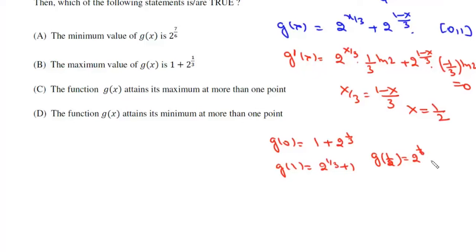g(1/2) is 2 to the power of 1 by 6 plus 2 to the power of 1 by 6, which is 2 to the power of 7 by 6.